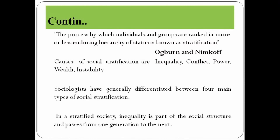The causes of stratification include inequality, conflict, power, wealth, and instability. A stratified society is marked by inequality, with differences among people evaluated as being higher, lower, or equal. Sociologists have differentiated between four main types of social stratification: slavery, estate, caste, and social class. In a stratified society, inequality is part of social structure and passes from one generation to the next.